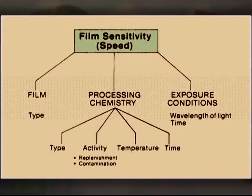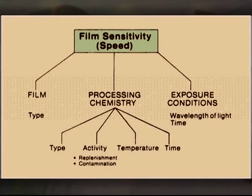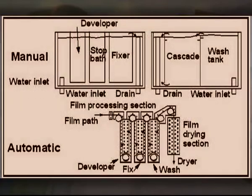Developer replenishment. The film development process consumes some of the developer solution and causes the solution to become less active. Unless the solution is replaced, film sensitivity will gradually decrease. In radiographic film processors, the replenishment of a developer solution is automatic. When a sheet of film enters the processor, it activates a switch that causes fresh solution to be pumped into the development tank. The replenishment rate can be monitored by means of flow meters mounted in the processor. The appropriate replenishment rate depends on the size of the films being processed.